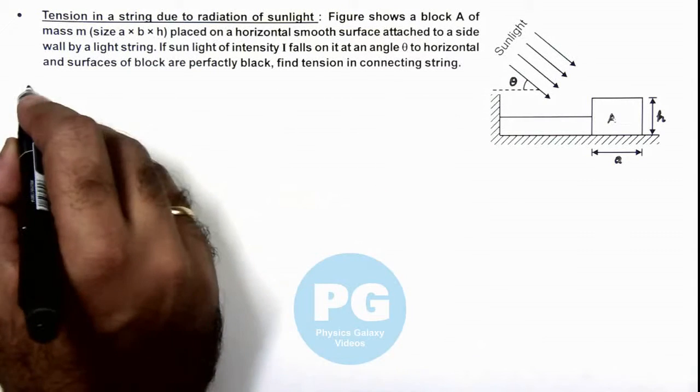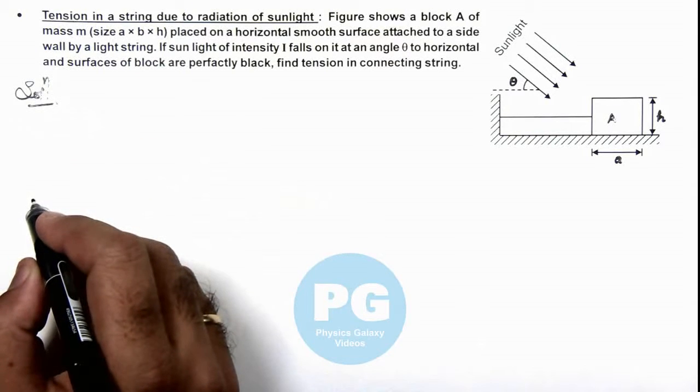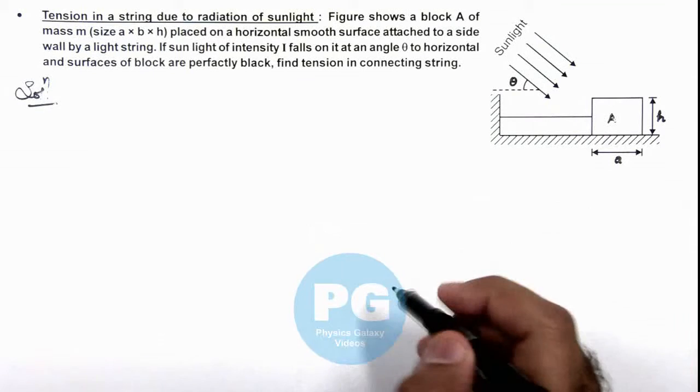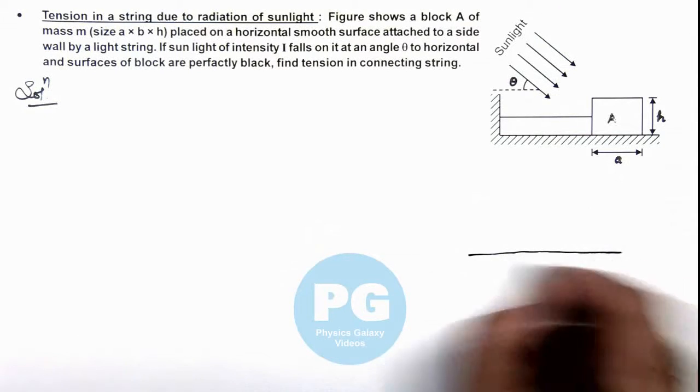Now in this situation, we can see first we can find out the cross-sectional area of light beam which falls onto this block, then we can redraw the picture here.